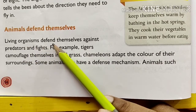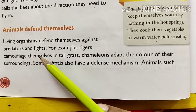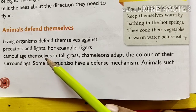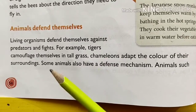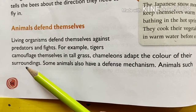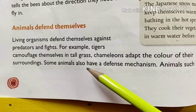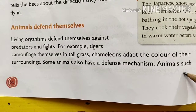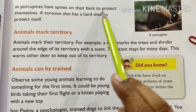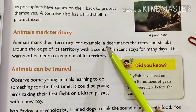Animals defend themselves and fight their predators. Animals such as porcupines have spines on their back to protect themselves.